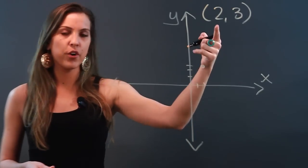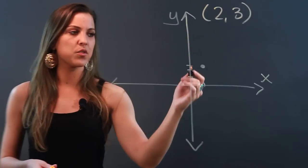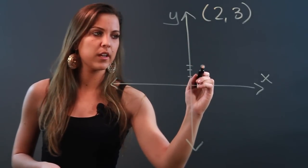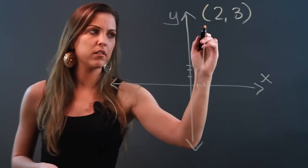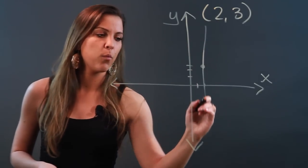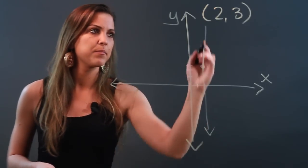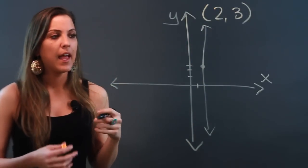To draw a vertical line that goes through that point, I'm drawing a line that's parallel to the y-axis. So here's my vertical line.